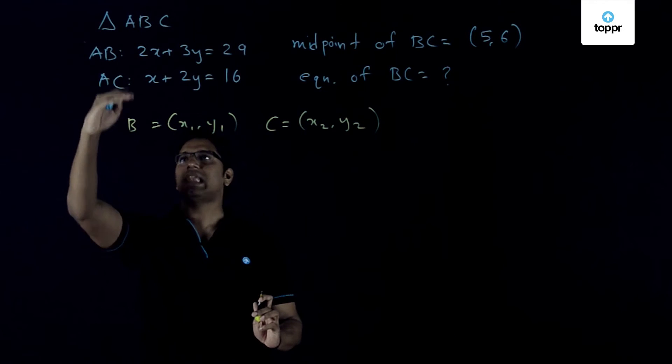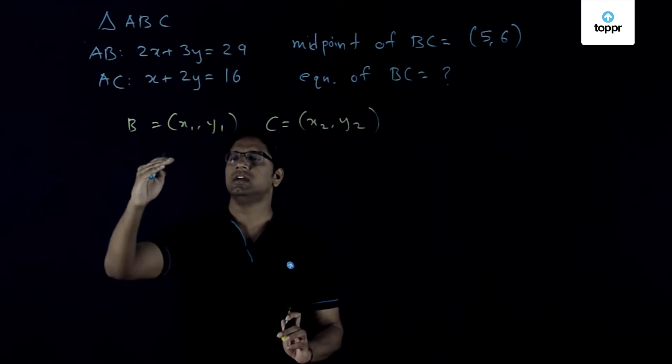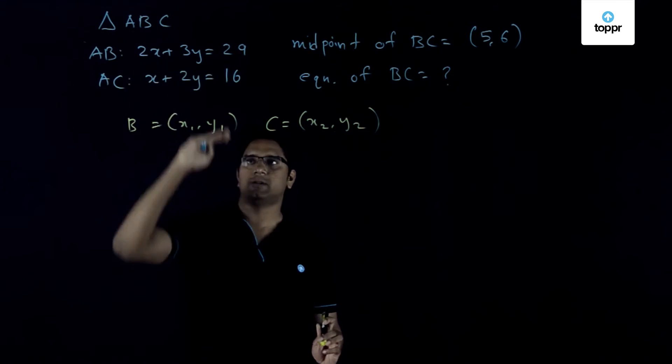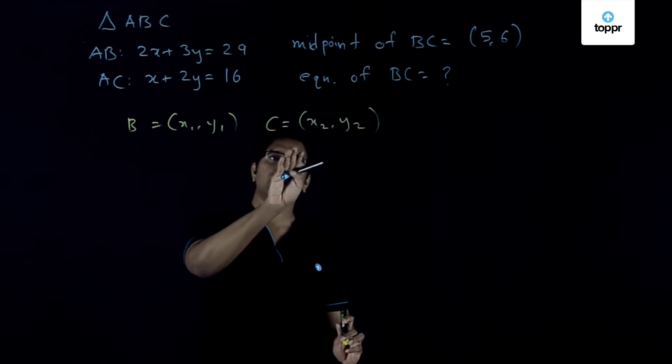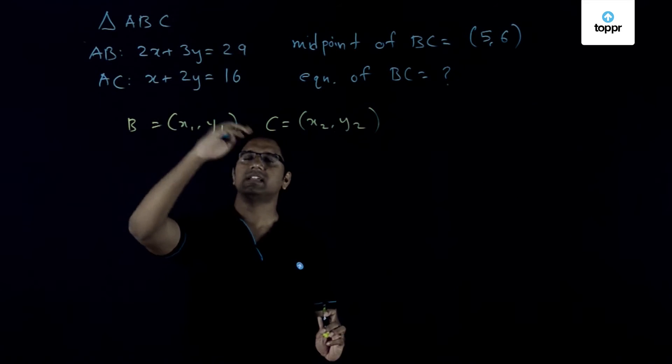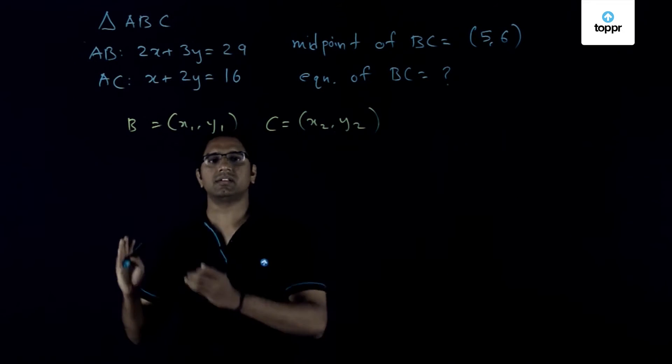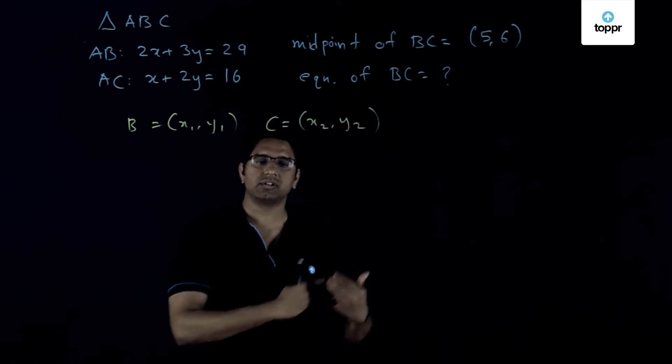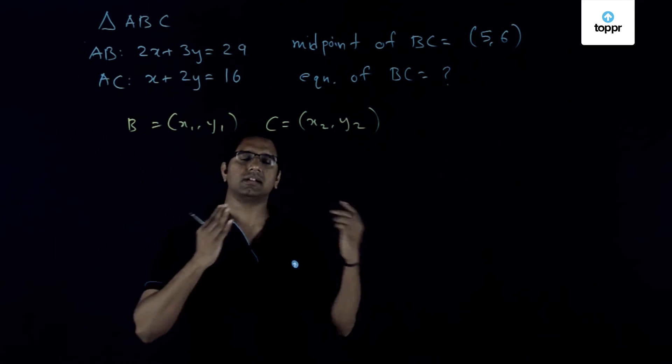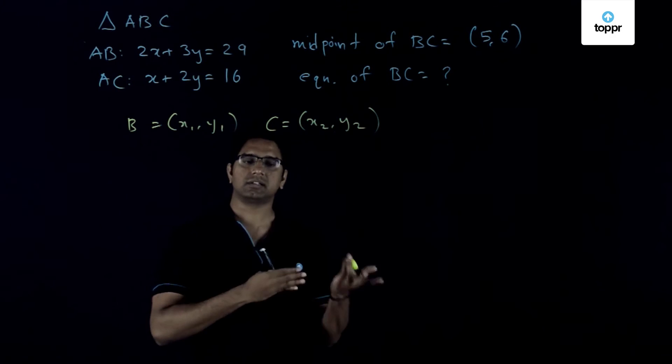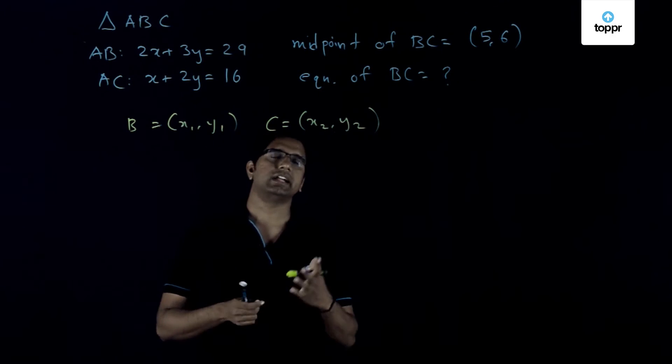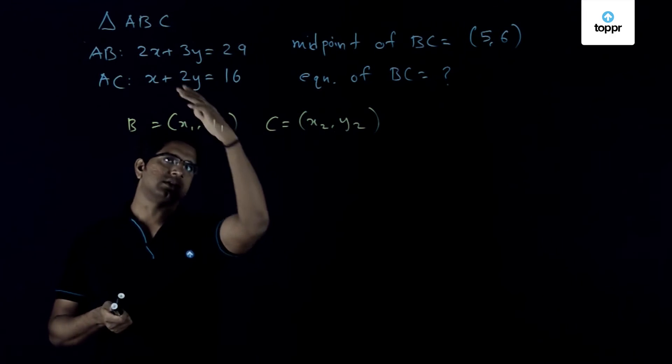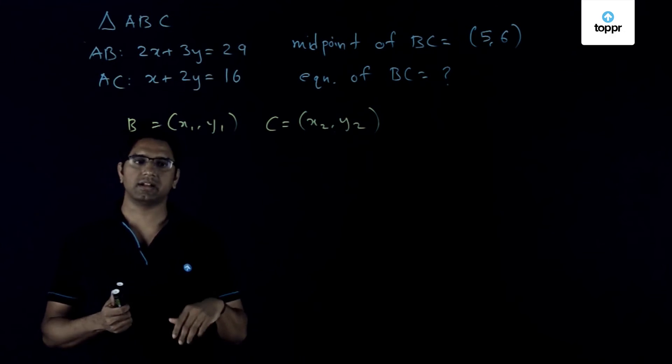since B lies on this side AB, we can write one more equation by plugging in (x1, y1) in this equation. Similarly, we can put the coordinates of C in this equation of AC and get the fourth equation. Therefore, we will be left with four equations and four unknowns to be found out. It's a simple matter of solving a system of linear equations, and if you solve all these, that is by the midpoint equations and the equations obtained by plugging it in here, you will obtain the coordinates of B.